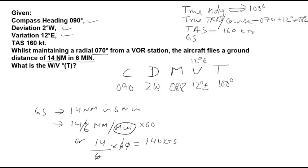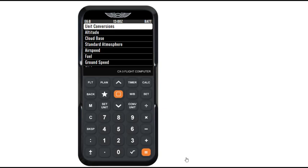Now we will put these values in our CX-3. In CX-3, select flight, scroll down to wind correction.